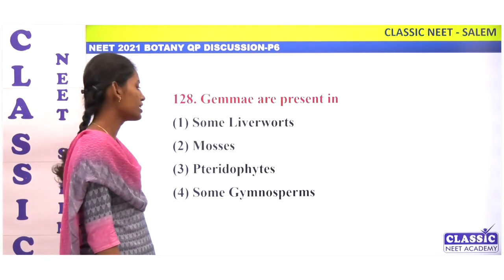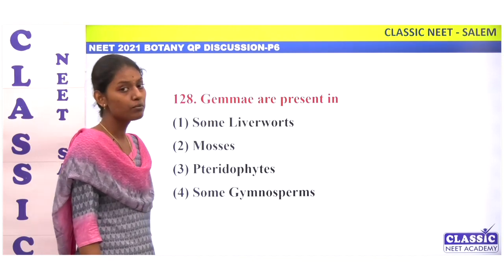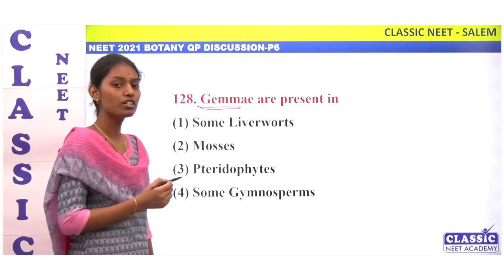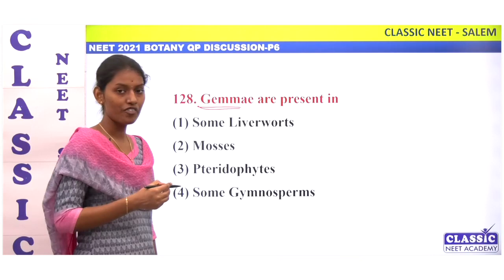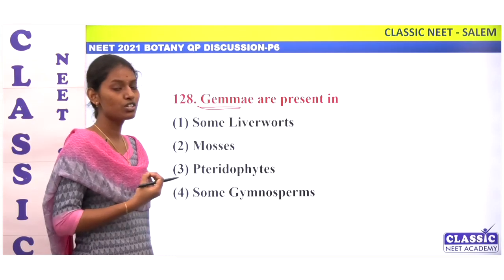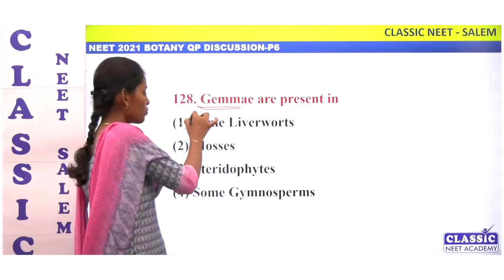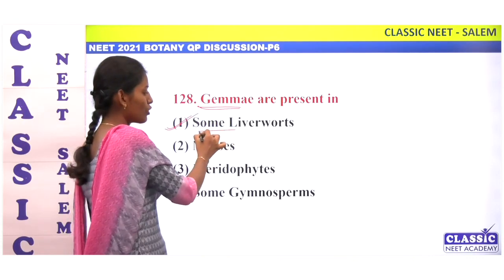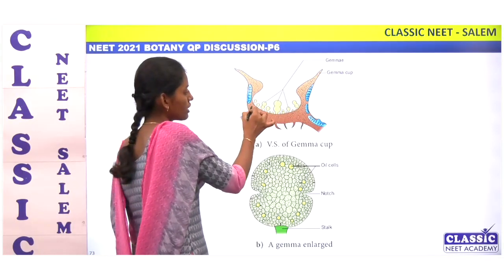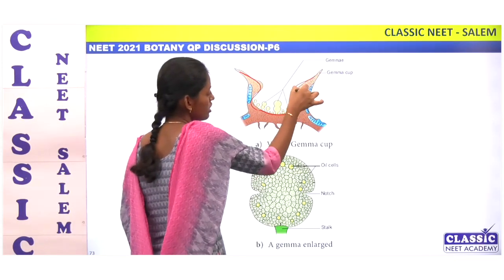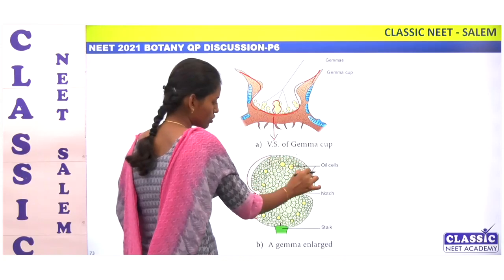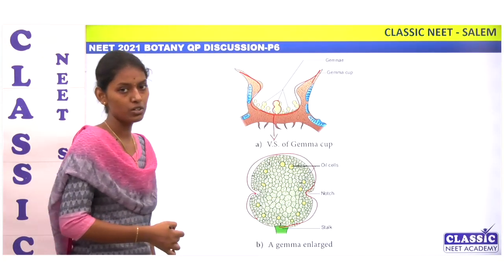Gemmae are present in some liverworts and mosses. Gemmae is a specialized vegetative reproductive structure. You can see gemmae in Marchantia — a bilobed structure seen in a gemma cup. It is option 1: liverworts only.